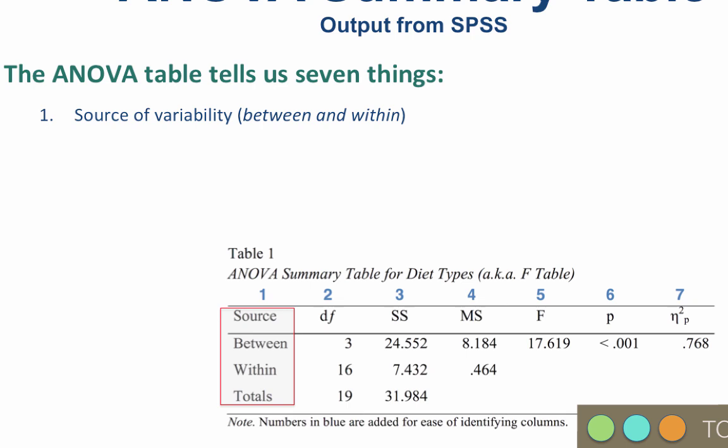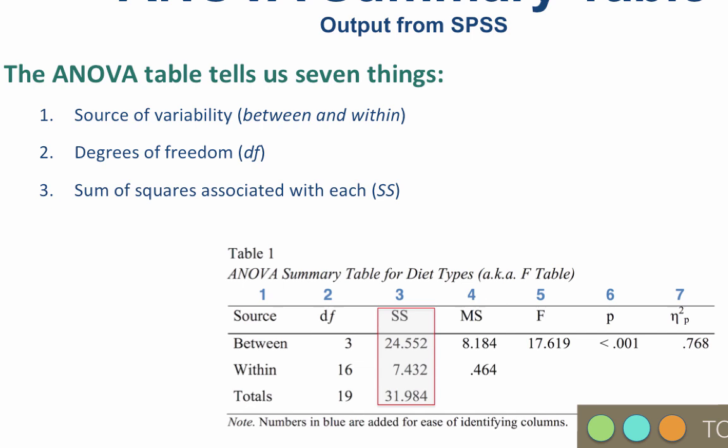Second is the degrees of freedom, also between, within, and total. Degrees of freedom goes in column two. Column three is the sum of squares associated with each, between, within, and total.